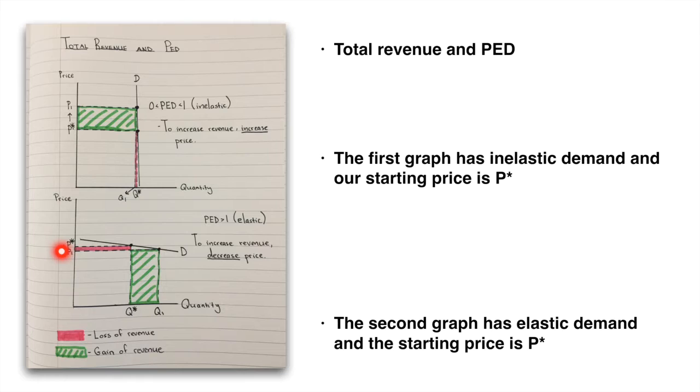But by dropping price to P1, we get this tremendous gain here in quantity sold of Q1. So our new total revenue area is going to be P1, Q1, an addition horizontally of this green area, but we lose this pink area vertically. But you'll notice that the gain is much more significant than the loss.